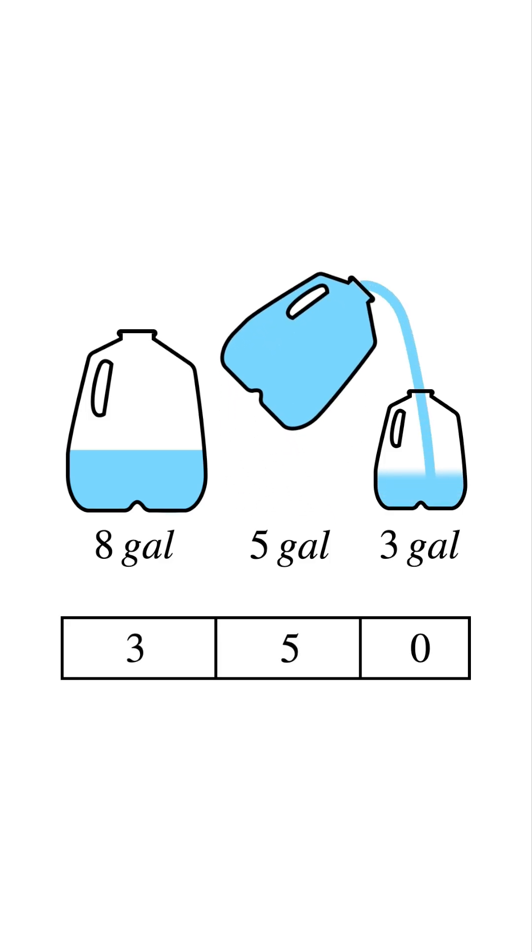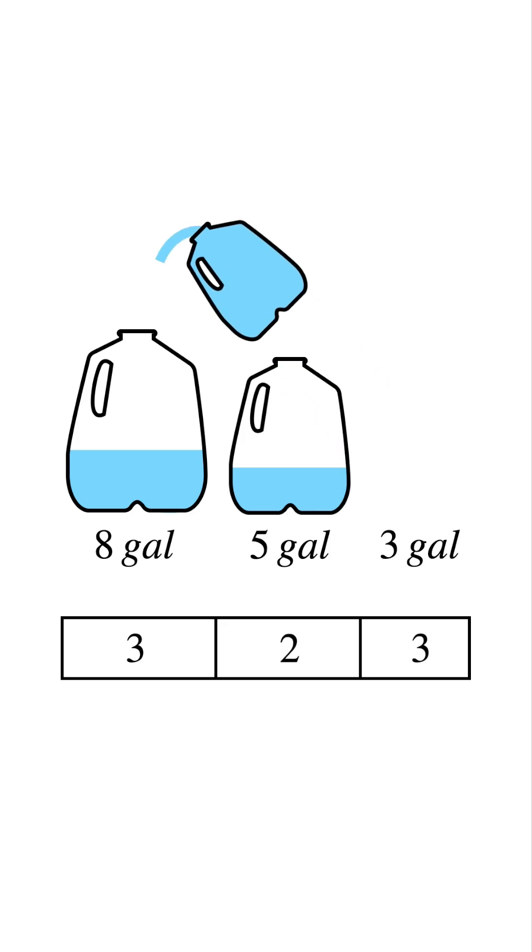Next pour from the 5 into the 3 until the 3 is full. Now the 3 has 3 and the 5 has 2 left. Then pour the full 3-gallon jug back into the 8. Now the 8 has 6 and 3 is empty.